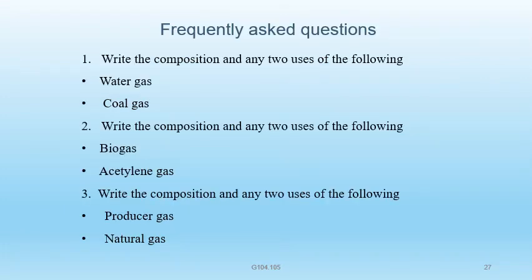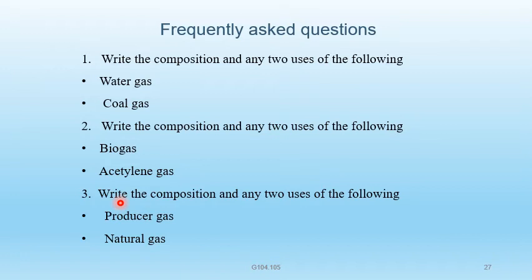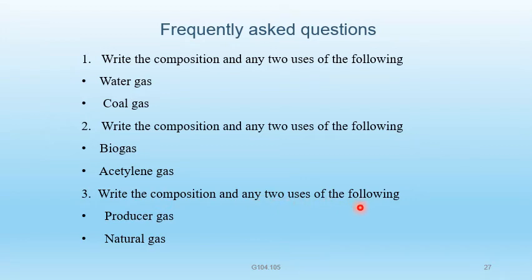Frequently asked examination questions include: write the composition and any two uses of water gas and coal gas; write the composition and any two uses of biogas and acetylene gas; and write the composition and any two uses of producer gas and natural gas.